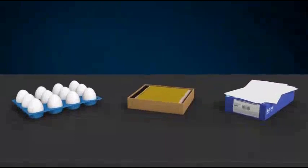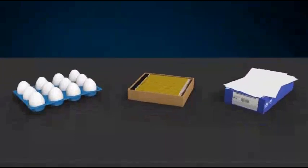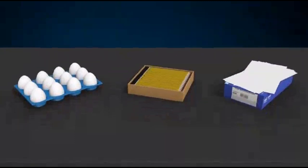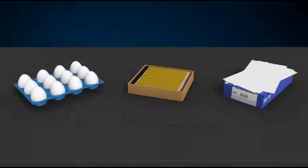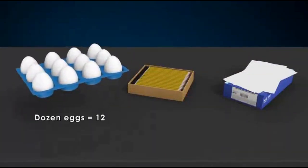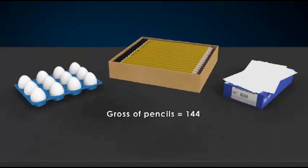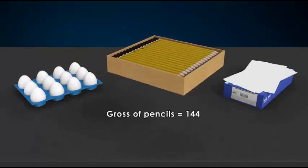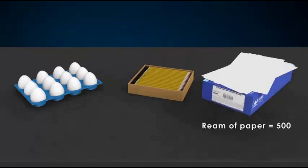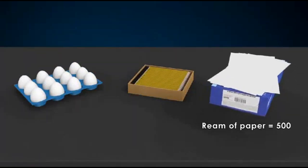In our everyday life, we often rely on specific terms of amount to quickly suggest a number. For example, a dozen eggs tell us that it's 12 eggs. A gross of pencils will be 144 pencils. And a ream of paper is a bundle of 500 sheets.